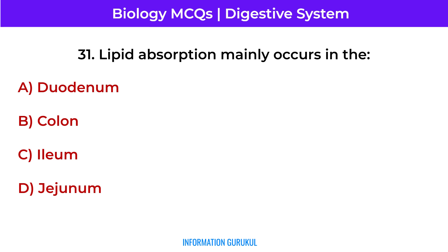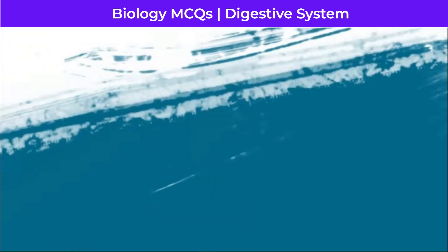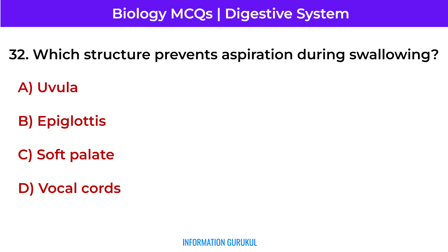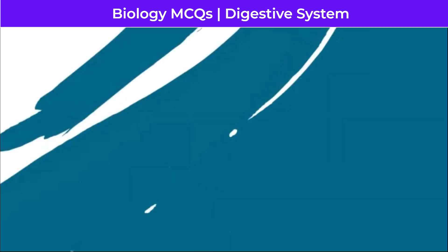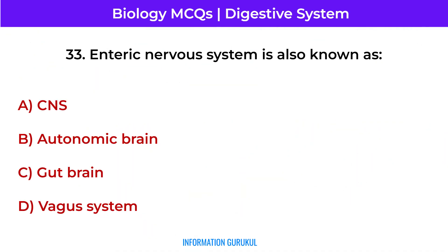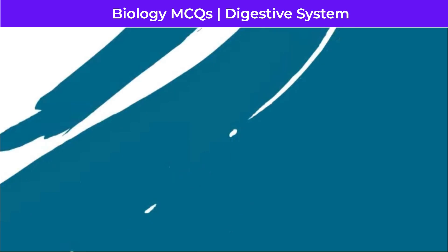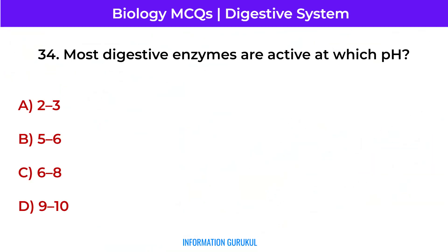Lipid absorption mainly occurs in the jejunum. Which structure prevents aspiration during swallowing? The epiglottis. The enteric nervous system is also known as the gut brain. Most digestive enzymes are active at which pH? 6 to 8.